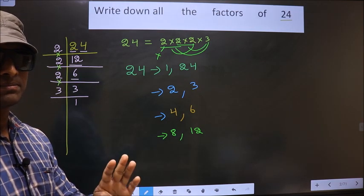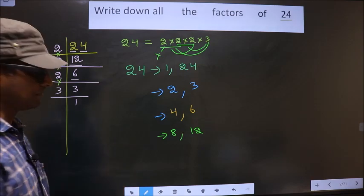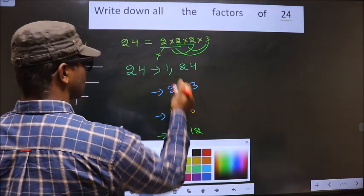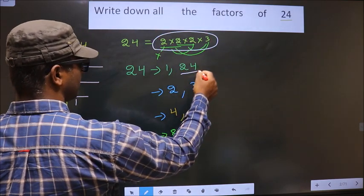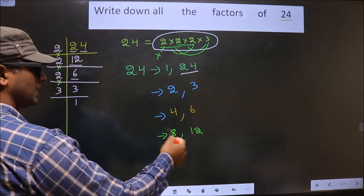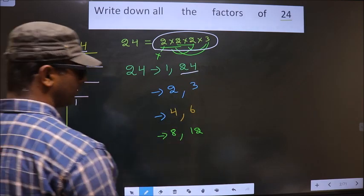Next, now you take 4 numbers at a time. So here there are 4 numbers. If we take all the 4 numbers, we get 24. So these are all the factors of 24.